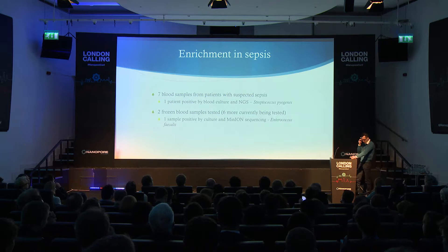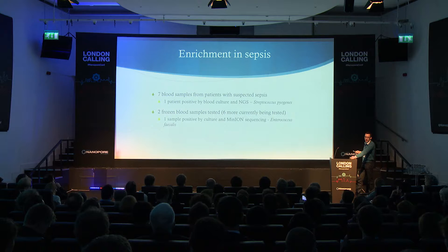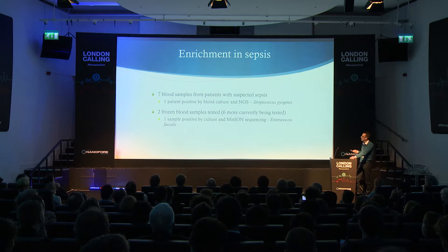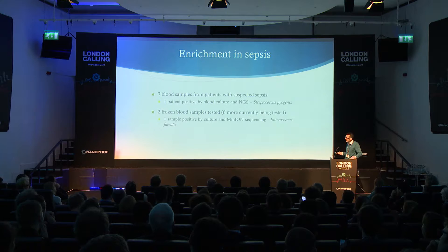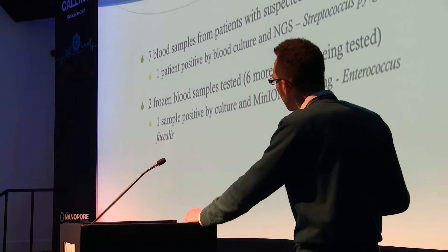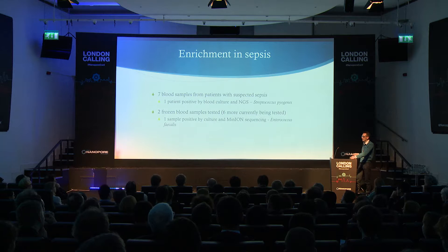We're currently running a prospective and a retrospective study. Numbers are very small and it's early days, but we have seven blood samples from patients with suspected sepsis collected prospectively in the local hospital in Norwich. One of those patients has been positive by blood culture and positive by our method — we detected Streptococcus pyogenes, which was the correct pathogen. In the second set of samples, one has been positive by both culture and MinION and we detected Enterococcus faecalis in that particular sample.